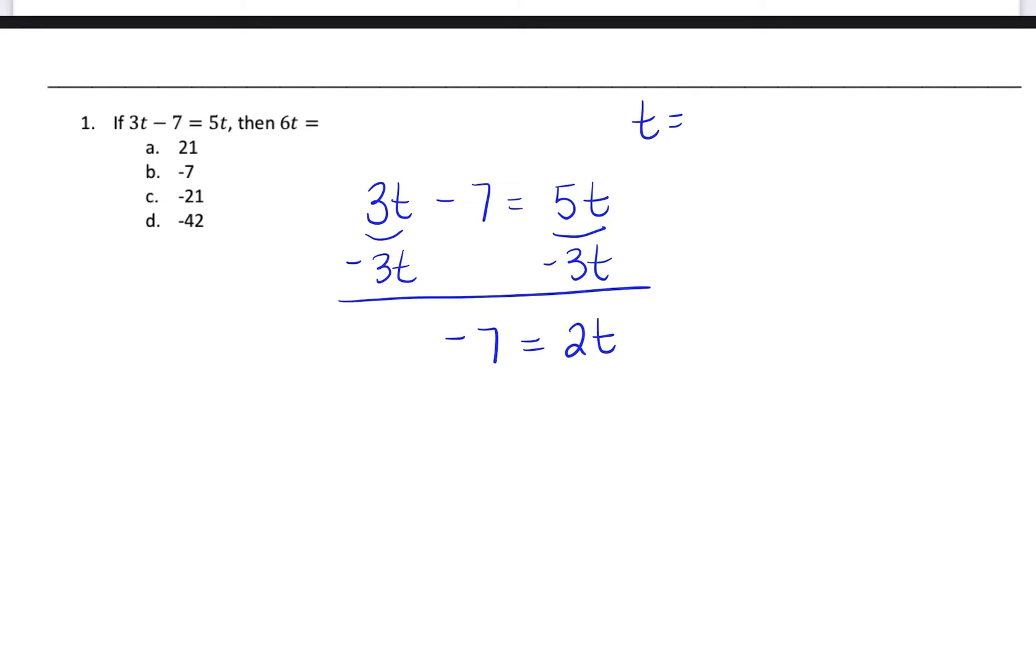And then I want to get T by itself. In order to get T by itself, I have to do the opposite of what's happening now. So anytime you see a number and a letter written right next to each other, what's happening is you're multiplying 2 times T. So if I want to get rid of the 2, I have to do the inverse operation or the opposite of what's happening.